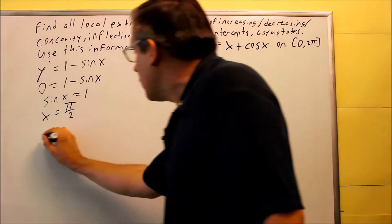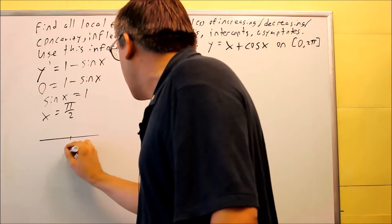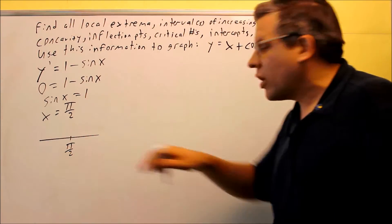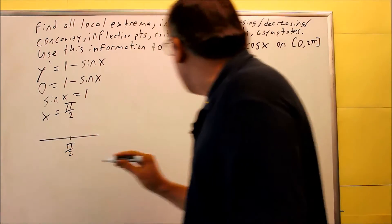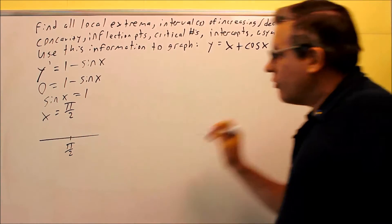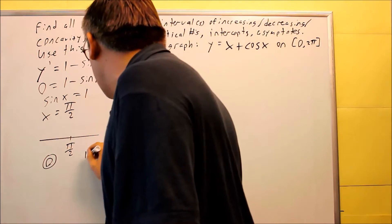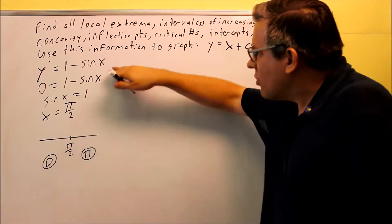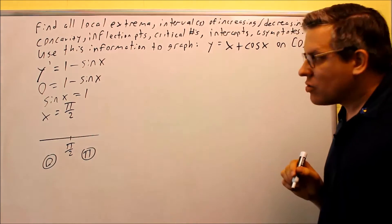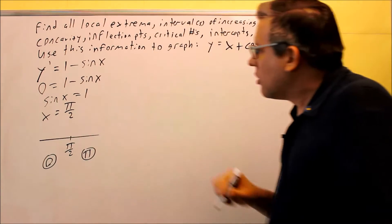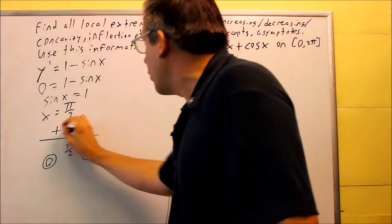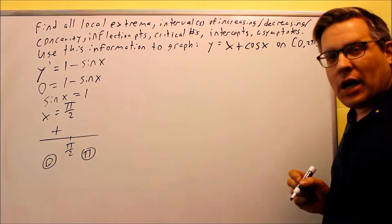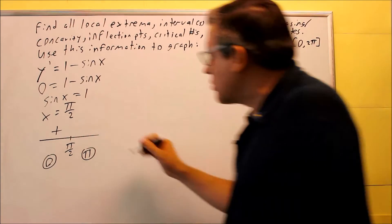We put pi over 2 on our number line and test values less than and greater than it. Since 0 is included on our interval, we can test 0, and then we test pi. Sine of 0 is 0, so we get 1 — that's a plus. Sine of pi is 0, so that's a plus also.